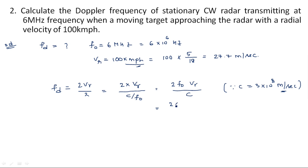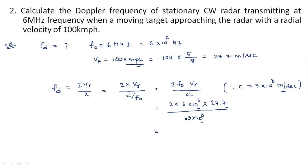Substituting the values: fd = 2 × (6 × 10^6 Hz) × 27.7 m/s divided by (3 × 10^8 m/s). The meters per second units cancel, leaving the answer in Hz. The result is approximately fd ≈ 1.11 Hz.